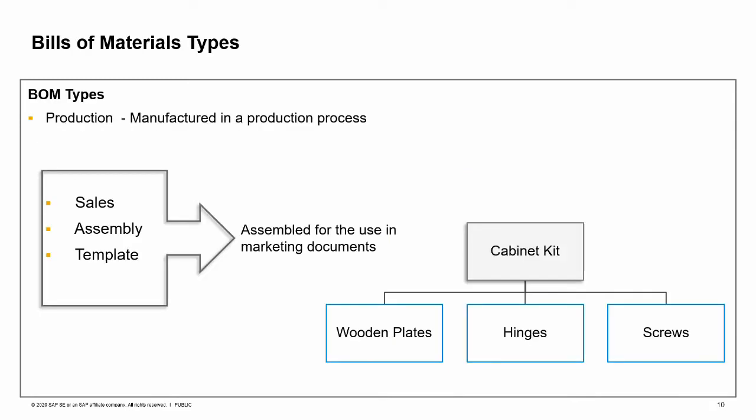On the Bill of Materials window you can choose one of four different types of BOMs. We have already learned about the production BOM, so let us have a look at the other three types: sales, assembly, and template BOMs. All three of these BOM types are used in marketing documents and do not go through a production process; therefore, no resources are involved. The components of these BOMs are assembled to create the parent item. The sales BOM is used in sales documents — the parent item must be a sales item. For example, OC Woodtrend sells build-it-yourself furniture kits. Once you select the parent item in a sales document, all the components appear as sub-items. You can update the quantities of the produced item or the components; however, you cannot delete a component or add new sub-items in the sales document. When you set up the BOM, you can select the hide BOM components in printout option so that when you print the document, only the parent appears.